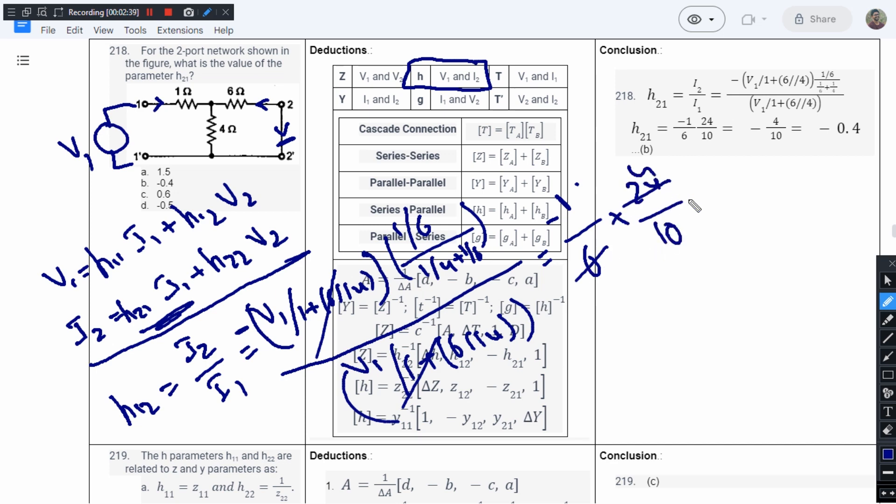So here 6 ones are 6, 4s are, so it will be minus 4 by 10, which equals minus 0.4. So this is how we will find the value of H21.